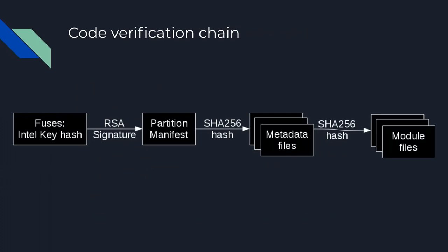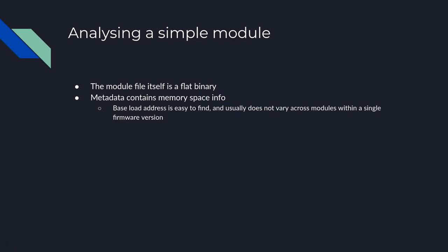All the code on the ME is signed and verified by Intel, so you can't just put in a new binary. At manufacturing time, Intel fuses in the hash of the public key they use to sign it. On each flash partition there is a manifest signed by that key, which contains SHA hashes for all metadata files, which then contain a SHA hash for the code files. The modules themselves are flat binaries, and the metadata contains all the info the kernel uses to reconstruct the actual program image in memory. Notably, the base address for all modules is the same across an image.